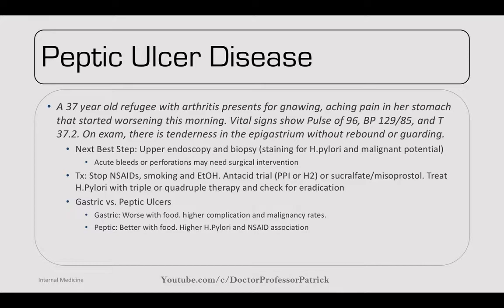Gastric versus duodenal ulcers: gastric ulcers are worse with food because eating activates acid production, with higher complication and malignancy rates. Peptic (duodenal) ulcers are better with food because the duodenum secretes bicarb when eating; higher risk of H. pylori and more associated with NSAID use.